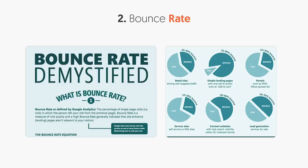Here are some examples of other sites and their bounce rates. Retail sites have roughly 20 to 40% bounce rate. Landing pages, 70 to 90%. Portals like MSN or Yahoo are somewhere around 10 to 30%. Service sites, anywhere from 10 to 30%. Content websites, 40 to 60%. Lead generation sites, 30 to 50%. Look at the graph, see what your website is closest related to — retail, landing page, B2B service, lead generation, or a content blog — and try to get your bounce rate somewhere in that range.